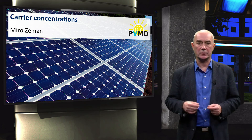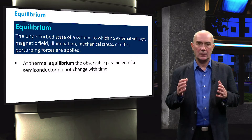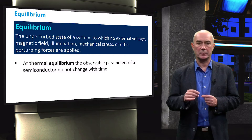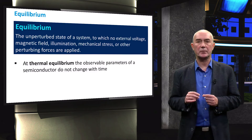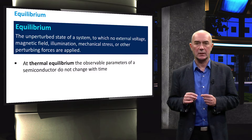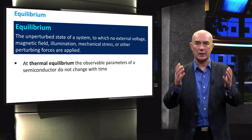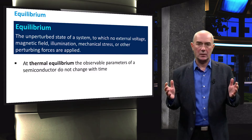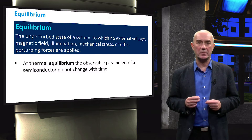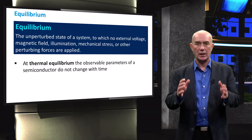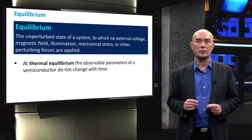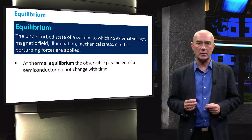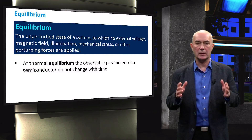Let's start with the equilibrium condition. We define equilibrium of a system as a state in which the system is unperturbed — therefore, no external forces are applied on this system. These forces could be external voltage, magnetic field, illumination, or mechanical stress. We can define the thermal equilibrium of a system as a condition in which its parameters do not change with time. We use the word thermal because the equilibrium conditions will change depending on the temperature.